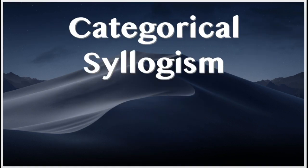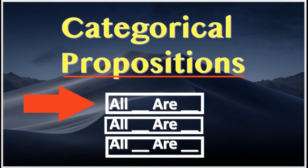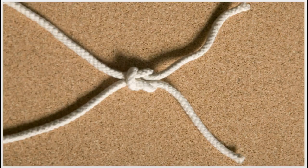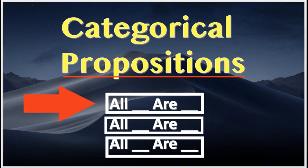The categorical syllogism is made up of statements. These statements are called categorical propositions. An interesting thing to notice about categorical propositions is that they join or relate two things together. They relate classes and categories. More on this later. For now, we will focus on standard form categorical propositions. If the new vocabulary has confused you, don't worry — just stay focused and we'll get through this.